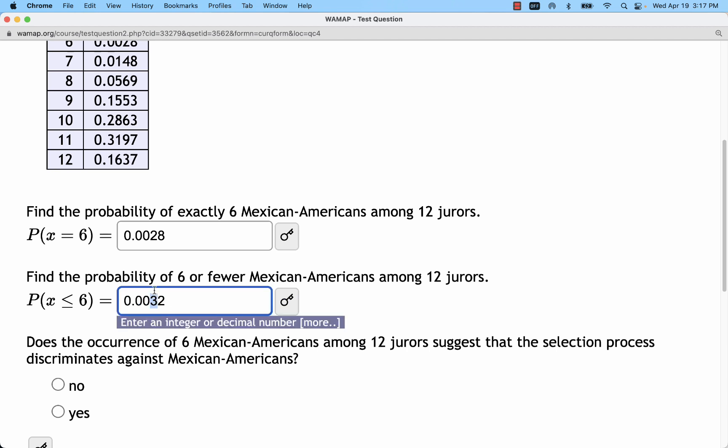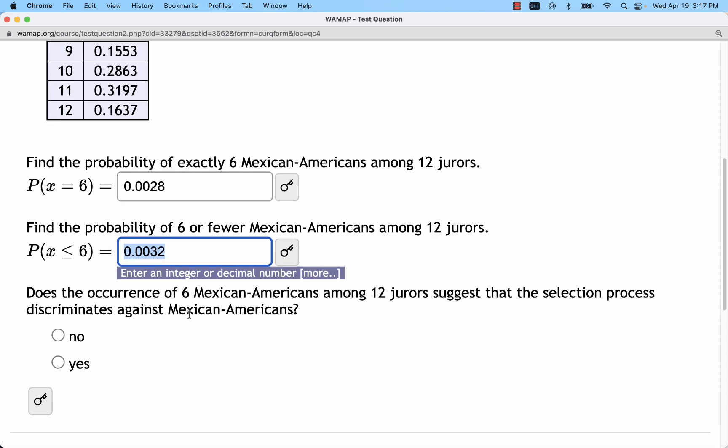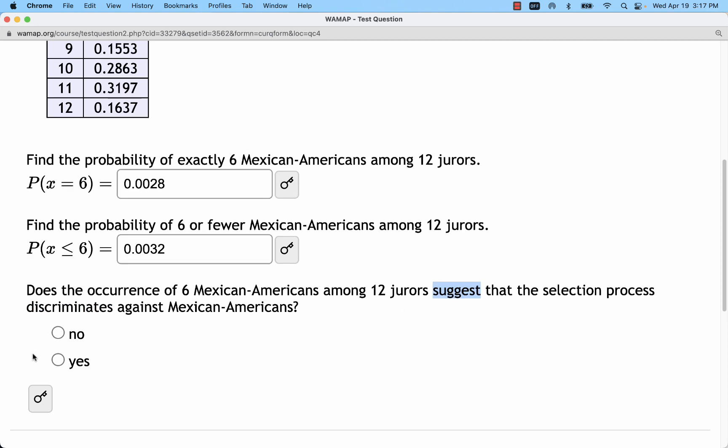So what we're saying is the outcome that we got is only going to happen under 1% of the time. That really gives us a little bit of evidence at the very least that there's some kind of discrimination or something going on. We can't conclude with certainty, but it does, we would say, suggest or provide evidence.